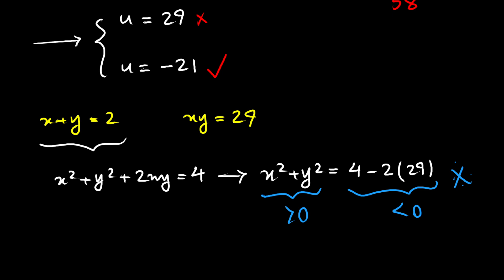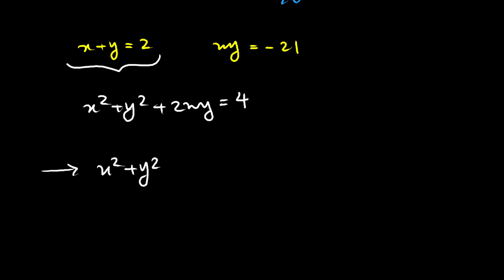But we will not have this same problem with negative 21. So, let's say x plus y equals 2 and x times y equals negative 21. Then, by squaring this, we will have x squared plus y squared plus 2xy equals 4. From this, I can say that x squared plus y squared equals 4 minus 2 times negative 21. Now, this is obviously something positive. This is a positive quantity. Therefore, we don't have any problem. And negative 21 is a valid solution.